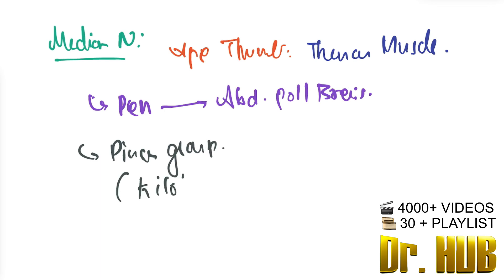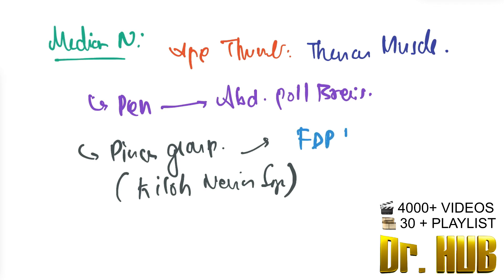Then there is the pincer grasp, which is the Kiloh-Nevin sign. The pincer grasp involves the flexor digitorum profundus plus the flexor pollicis longus — involving the anterior interosseous nerve.